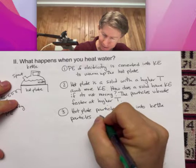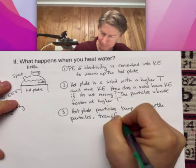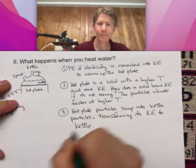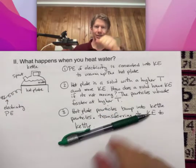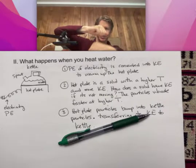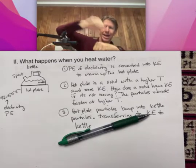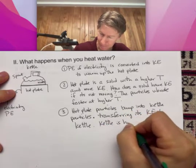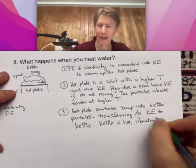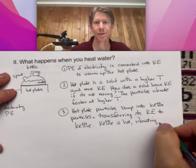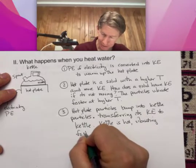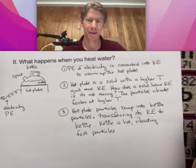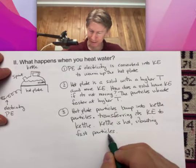The hot plate is transferring its kinetic energy to the kettle. So now the kettle is hot — hot plate bumps into kettle, they sit right on each other, and now the kettle is hot. The kettle is hot, vibrating fast particles. It's like a giant conga line of vibrations being transferred from one object to another.